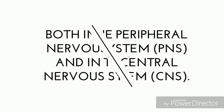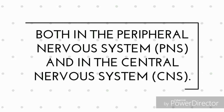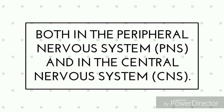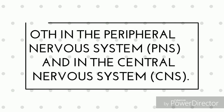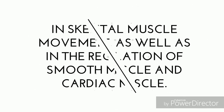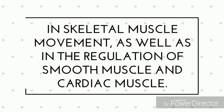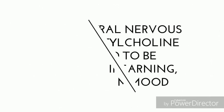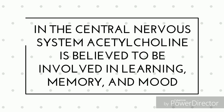Acetylcholine has functions both in the peripheral nervous system (PNS) and in the central nervous system (CNS). In the peripheral nervous system, acetylcholine plays a role in skeletal muscle movement, as well as in the regulation of smooth muscle and cardiac muscle. In the central nervous system, acetylcholine is believed to be involved in learning, memory, and mood.